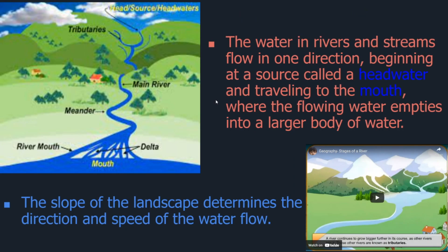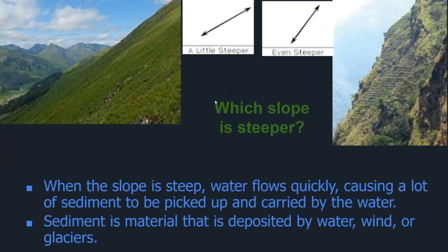Slope would determine the direction and speed of water, because the only thing pushing the water in a river or stream is gravity. You can judge the speed by the slope. Let's do a visual test — looking at two slopes, the steeper one on the right means water would flow much quicker there.